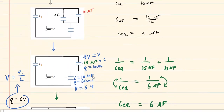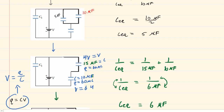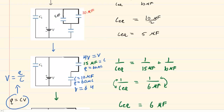Continuing to work backwards through the circuit, we take this capacitor and move back to the parallel arrangement. The rule states that moving back to parallel, we bring the potential with us — so we bring the 4 volts. Both capacitors in this parallel arrangement will have 4 volts. We then calculate the charges: 10 microfarads times 4 volts gives 40 microcoulombs, and 5 microfarads times 4 volts gives 20 microcoulombs.